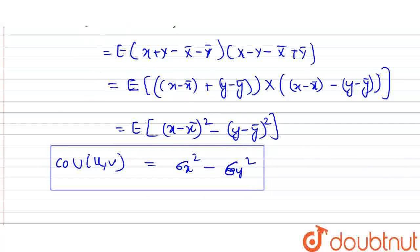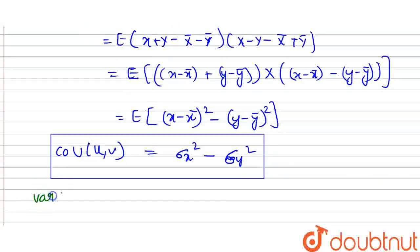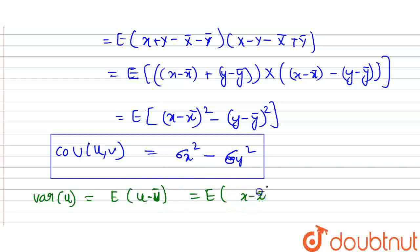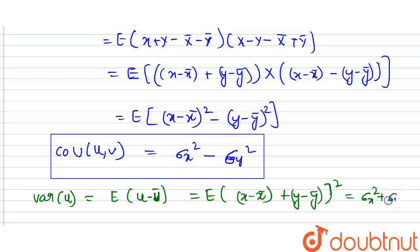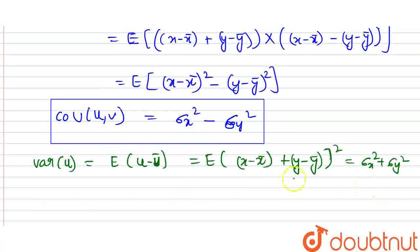Now let's take the next one: variance of u. What is it? E of u minus u-bar whole square. We represent it as E of x minus x-bar plus y minus y-bar whole square, which gives sigma x squared plus sigma y squared. Variance of u equals sigma x squared plus sigma y squared, as I have written here. Similarly, variance of v.